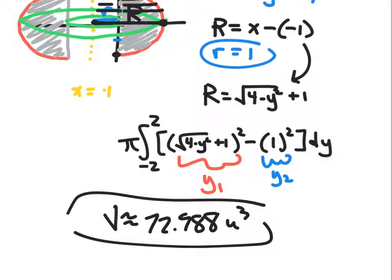Okay, so using my calculator, I get 72.988 units cubed. That's it for washer method. Tomorrow we'll do our last lesson of the chapter, and then we'll move on to chapter 8.